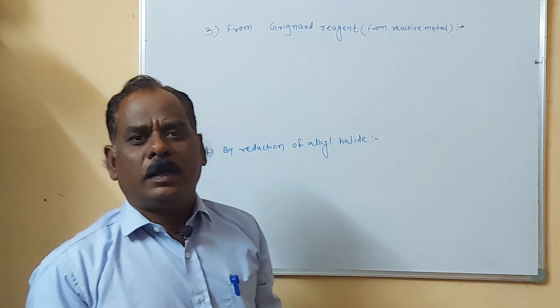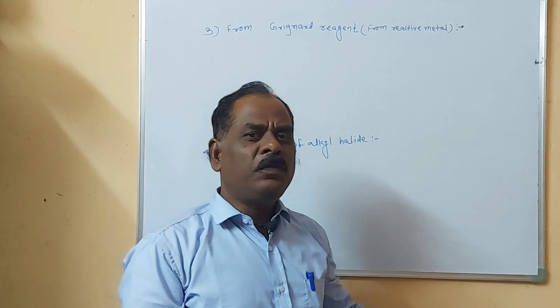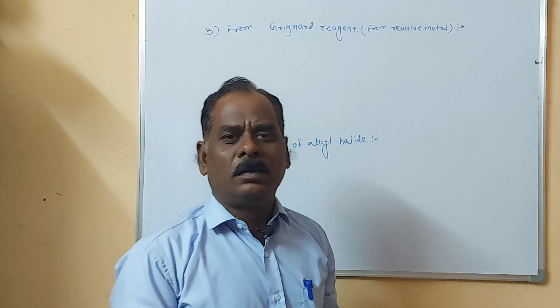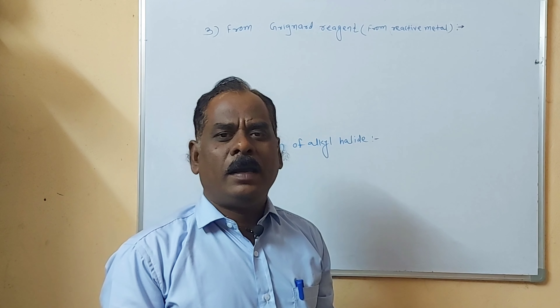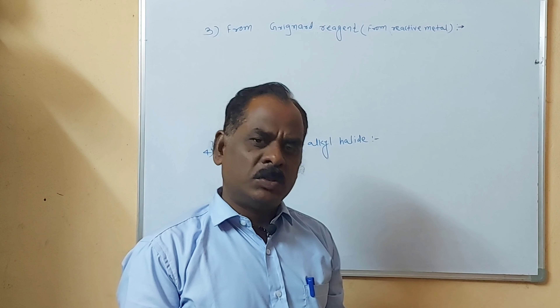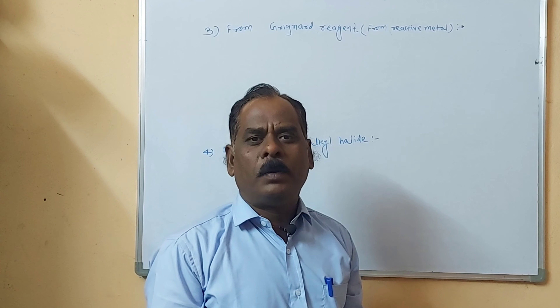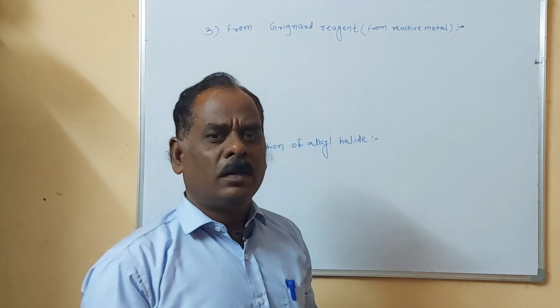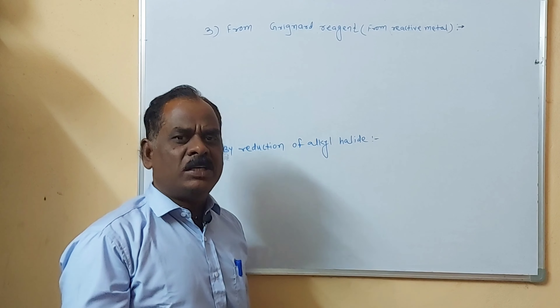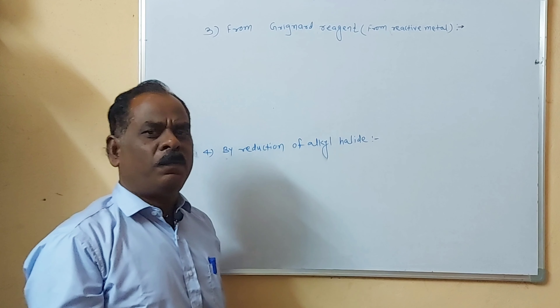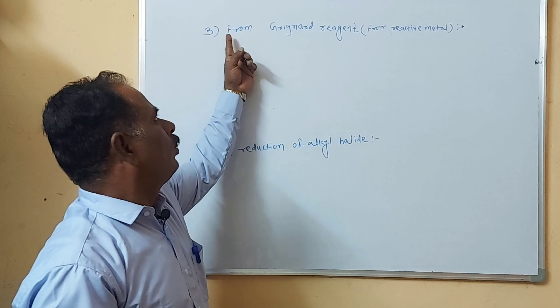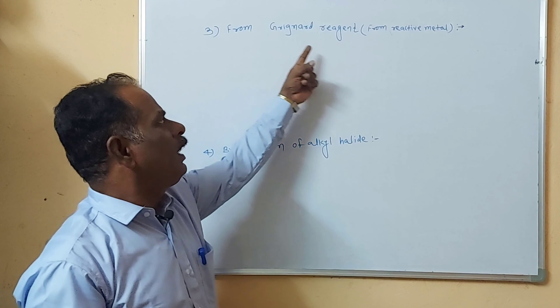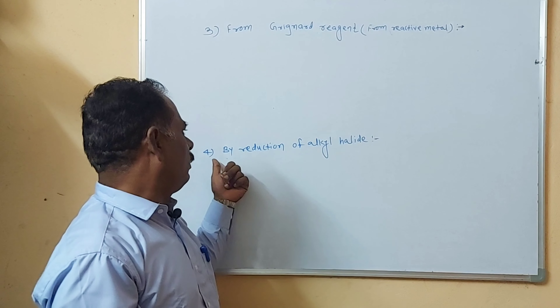Hello students. In the last video we studied the preparations of alkane by using unsaturated hydrocarbon compounds and by Wurtz synthesis. The remaining two methods are covered in this lecture. The first is from Grignard reagent, also called from reactive metals, and the last is by reduction of alkyl halide.